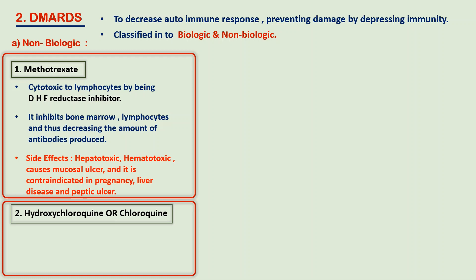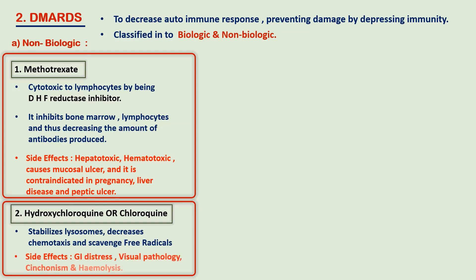The next category of drug is hydroxychloroquine, also called chloroquine. It stabilizes the lysosomes, decreases chemotaxis, and scavenges free radicals. The main side effects associated are gastrointestinal distress and corneal and retinal toxicity. It also causes hemolysis in glucose-6-phosphate dehydrogenase deficient patients.